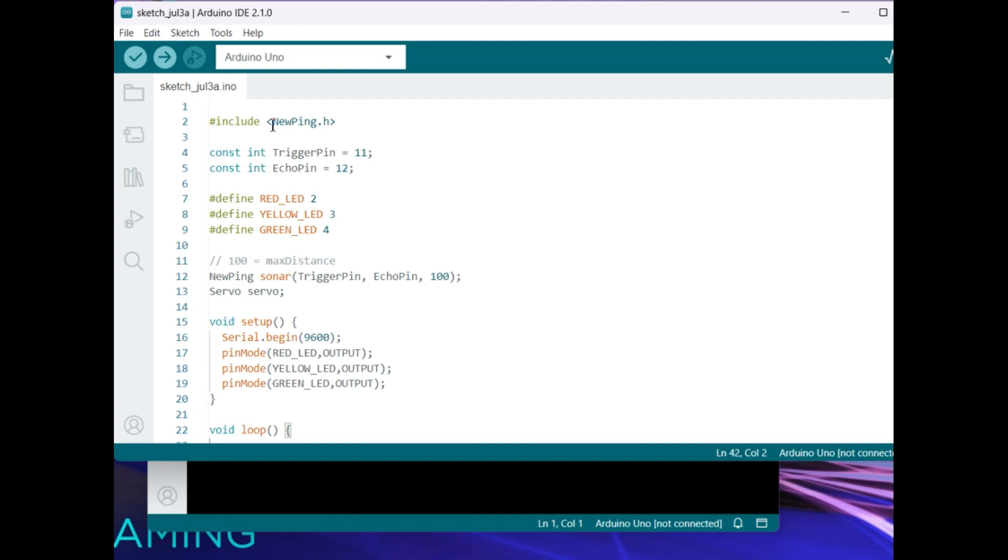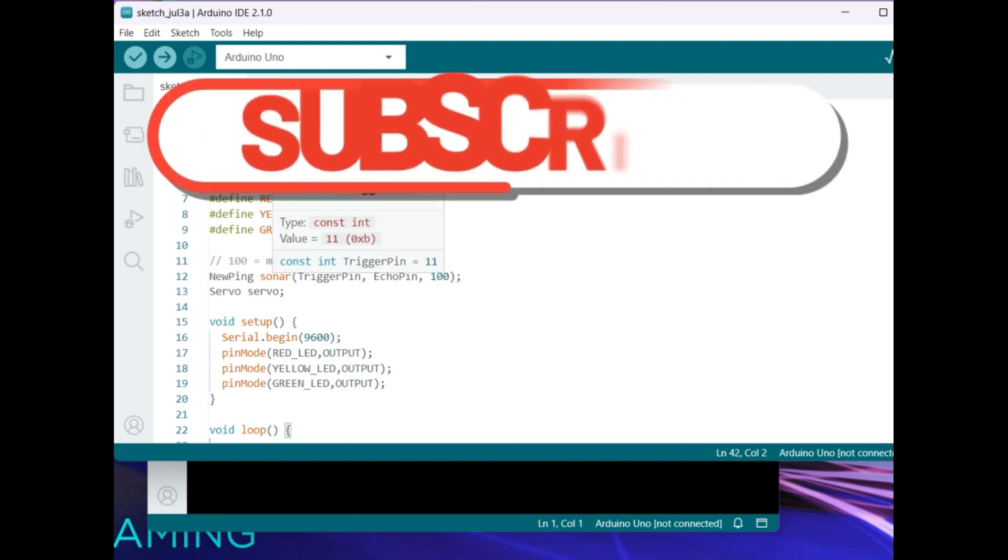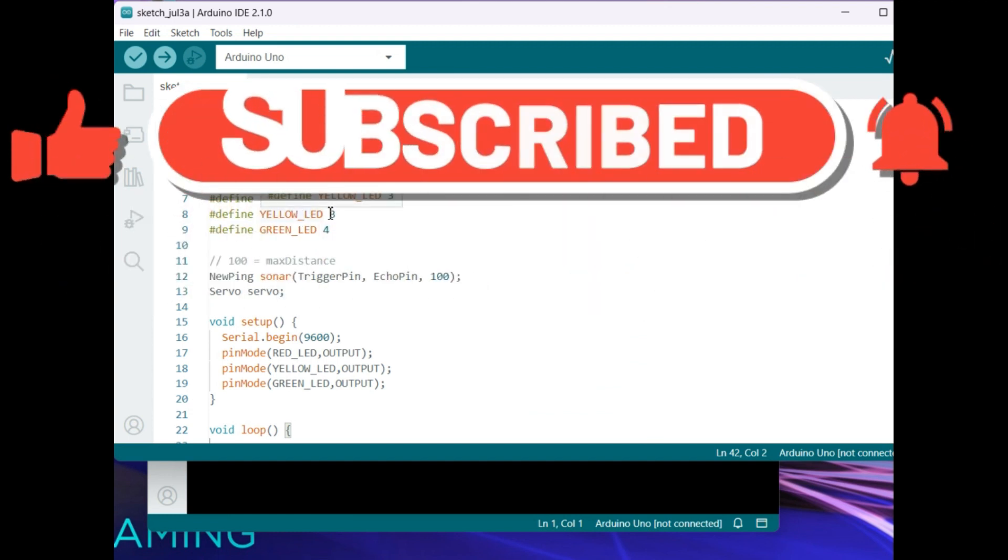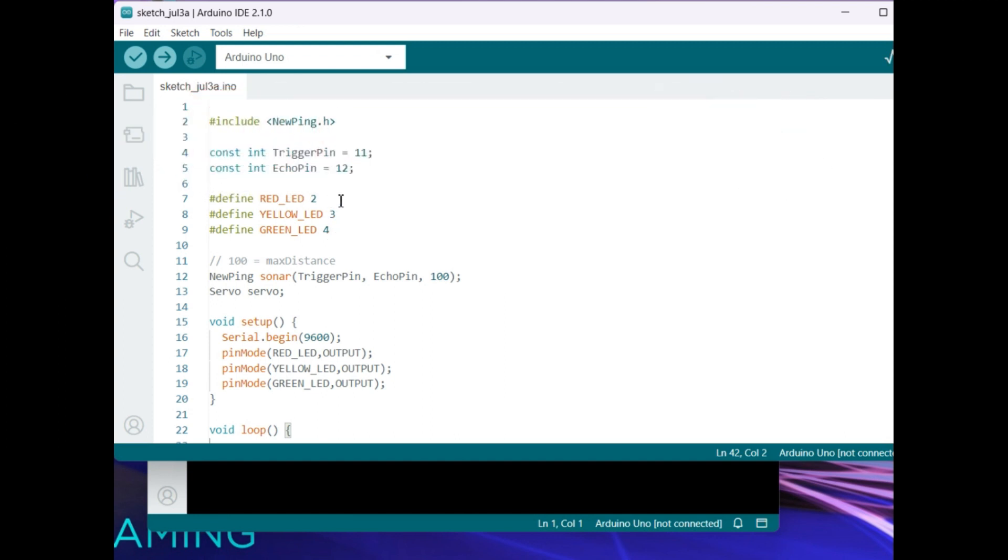That is NewPing. So it is having the trigger pin we have connected to the 11 and echo pin we have connected to the 12. Red LED, yellow LED, and green LED we have connected to 2, 3, 4. So if you did any modifications as per the things, you can modify it.